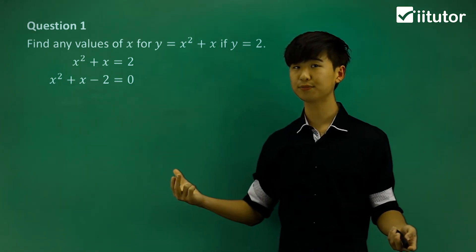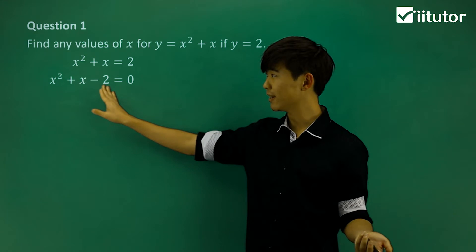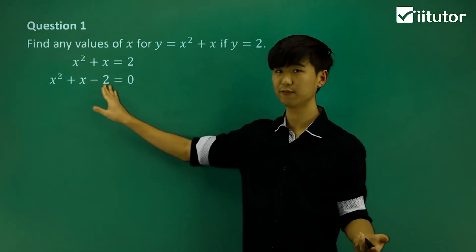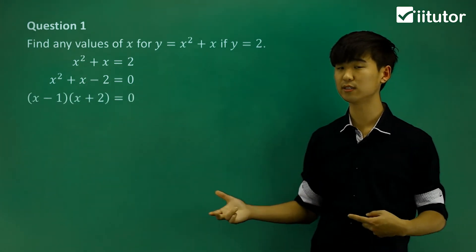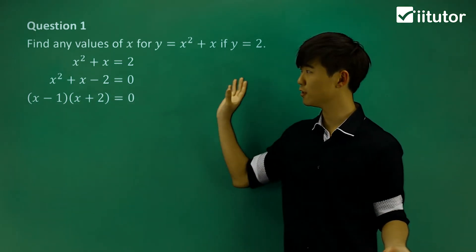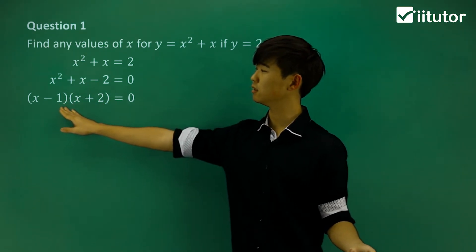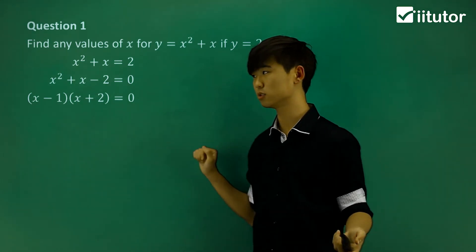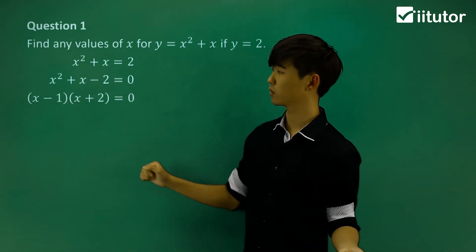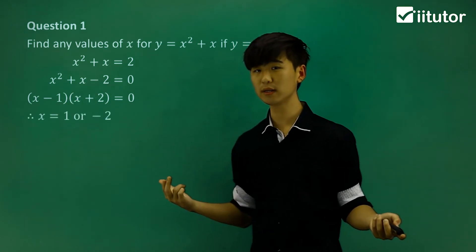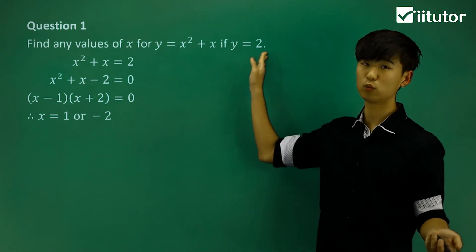From there, I want to factorize. So how do we factorize quadratics? We're going to look at the factors of negative 2 — two numbers whose product is negative 2, but they add to give us 1. If you're not sure how to factorize quadratics, please refer to another video. Once we factorize, we get (x − 1)(x + 2) = 0, meaning each bracket equals 0, so x = 1 or x = −2. That's how you find the value of x given y = 2.